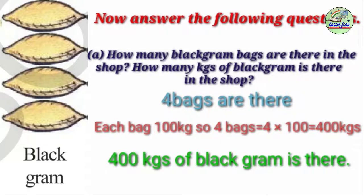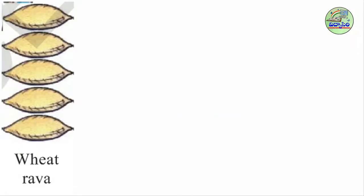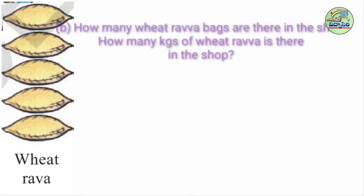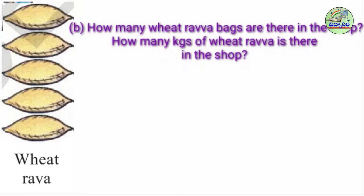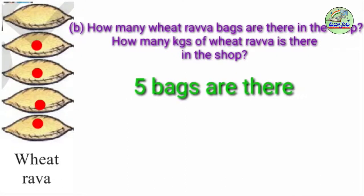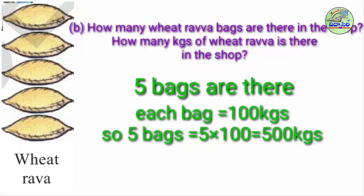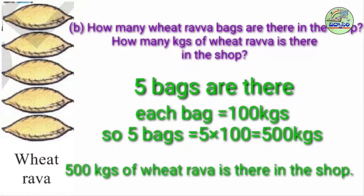I will tell another example about wheat rava. Look at this picture carefully. How many wheat rava bags are there in the shop? How many kgs of wheat rava is there in the shop? I will count the bags: 1, 2, 3, 4, 5 — 5 bags are there. Each bag contains 100 kgs, so 5 into 100 = 500 kgs. The answer is 500 kgs of wheat rava is there in the shop.